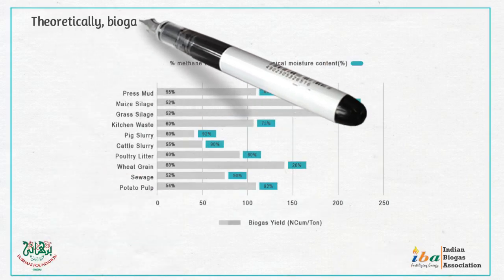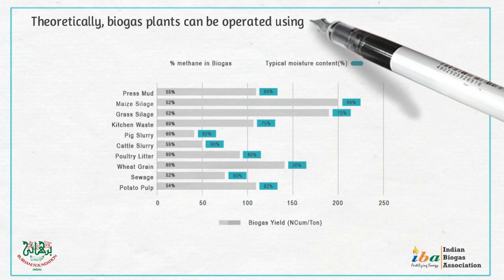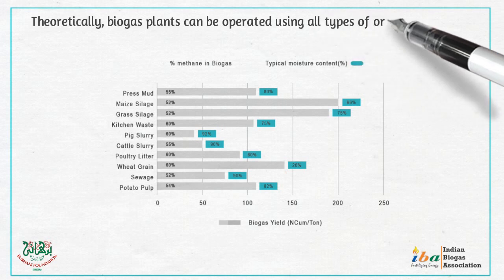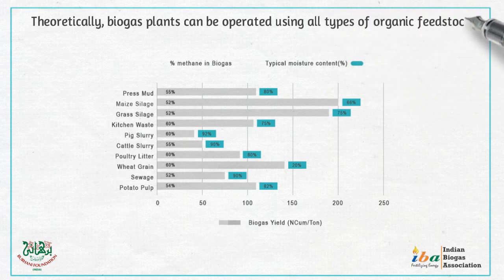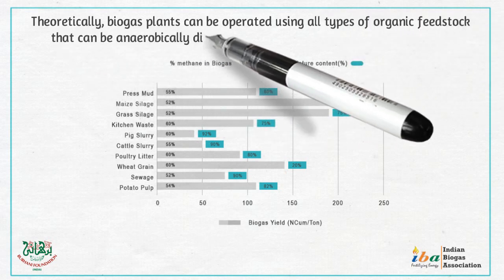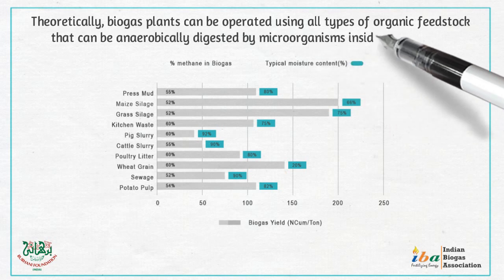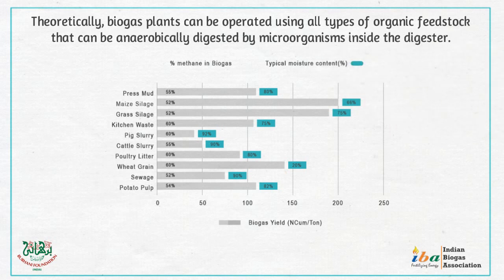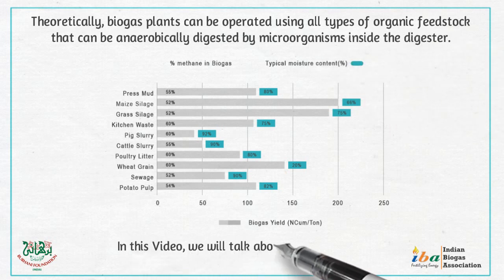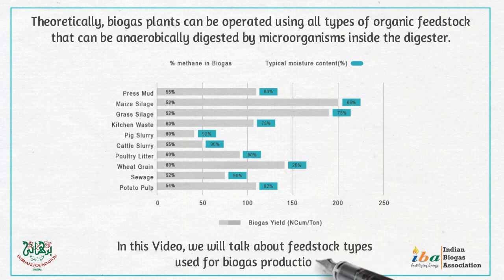Theoretically, biogas plants can be operated using all types of organic feedstock that can be anaerobically digested by microorganisms inside the digester. In this video, we will talk about feedstock types used for biogas production.